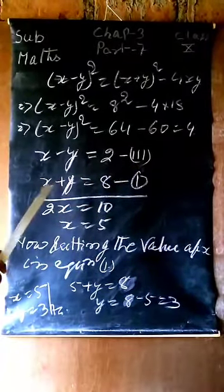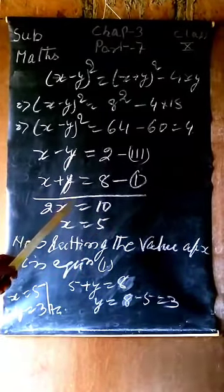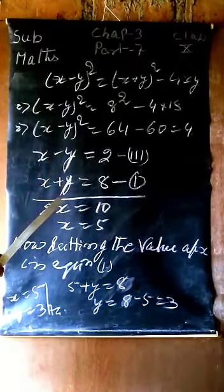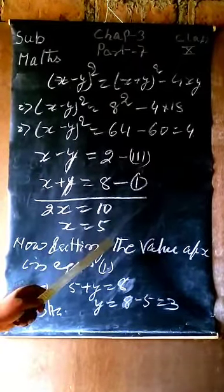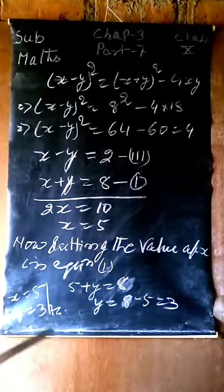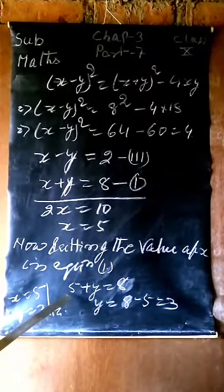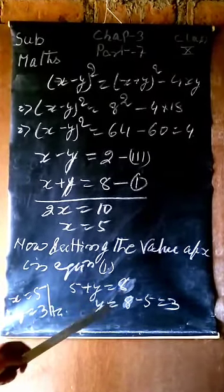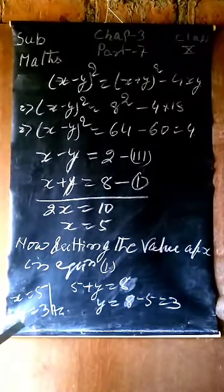Then we bring equation first here, so x plus y equals 8. This is equation first. Now we add both equations, so y cancels. 2x equals 10, then x equals 5. Now we put x value in any one equation to find y. Let's put in first equation, so x value is 5, then 5 plus y equals 8, so y equals 3. So first number is 5 and second number is 3.